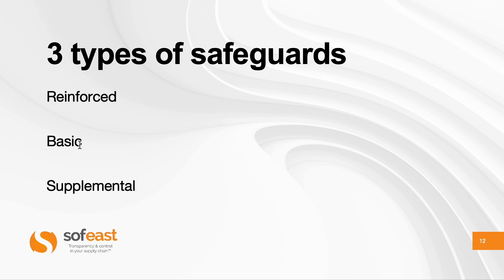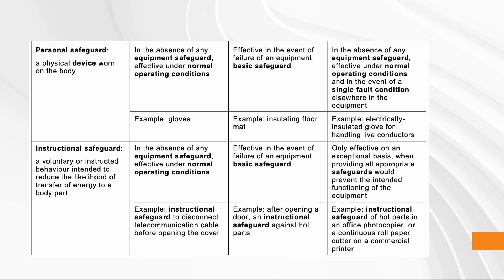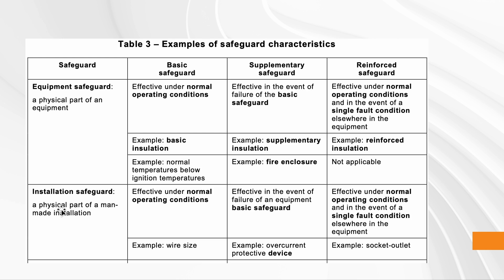In some cases, a reinforced safeguard can be replaced by a basic plus supplemental safeguard. The standard provides Table 3 showing different kinds of safeguards from most effective to least effective. If you just provide instructions, you're hoping people will read the user manual. If you count on people to wear personal protective equipment, you're relying on them to take action. If you require companies to install something during product setup, that's also a dependency.